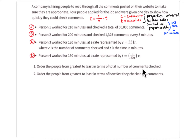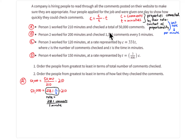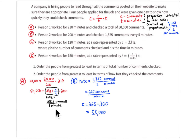Question one asks for the total number of comments checked by each applicant, and question two asks how fast they are checking. For applicant A, they tell you it's 50,000 comments in 210 minutes. The equation is comments equals comments per time times time, so 50,000 divided by 210 gives 238.1 comments per minute.